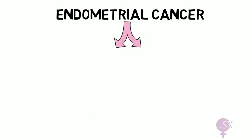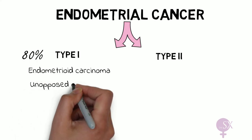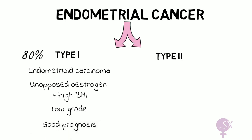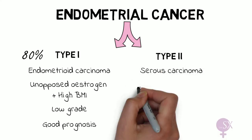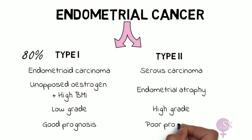There are different types of endometrial cancer. Type 1, the most common, is referred to as endometrioid carcinoma and accounts for around 80% of endometrial cancers. It occurs as a result of unopposed estrogen and in patients with a high BMI. It is low grade with a relatively good prognosis. Type 2 endometrial cancer refers to a serous form of carcinoma, secondary to endometrial atrophy. It is high grade and has a poor prognosis.